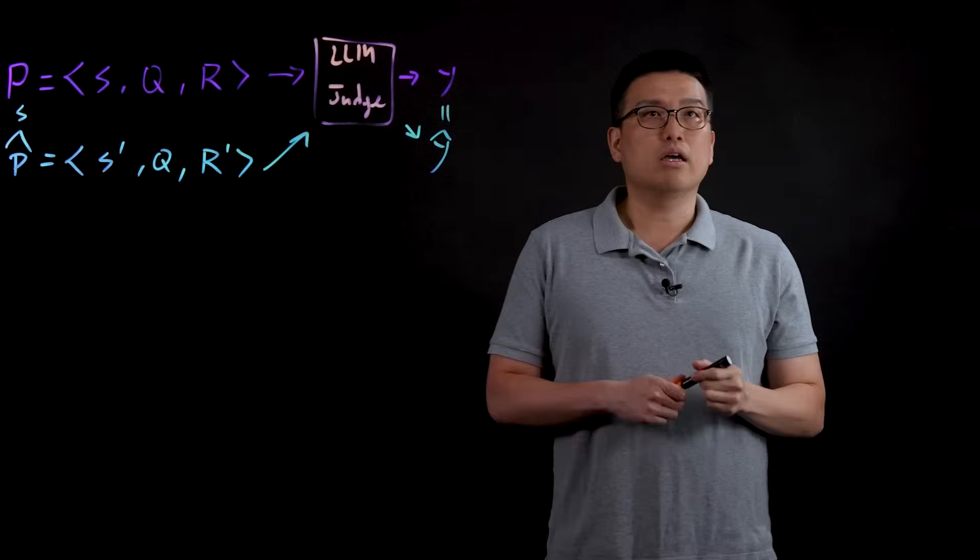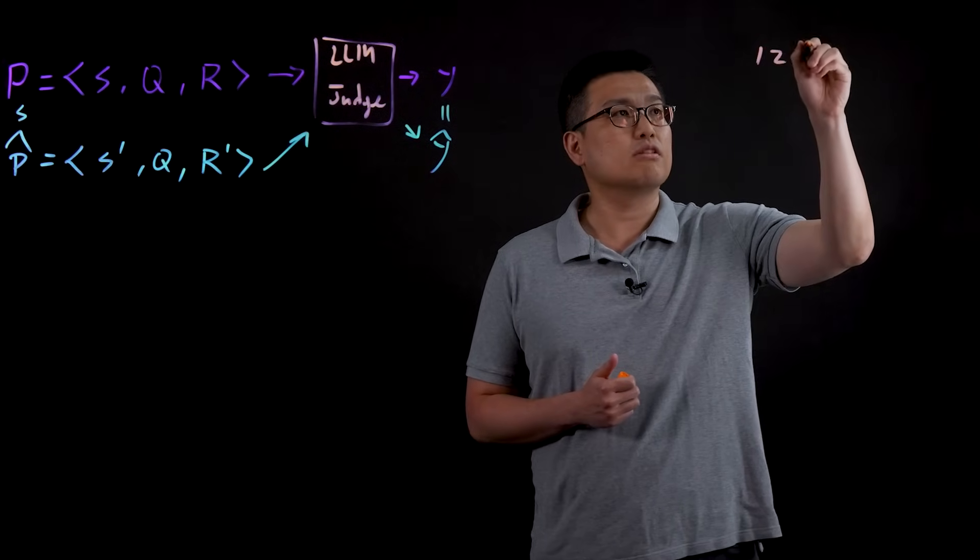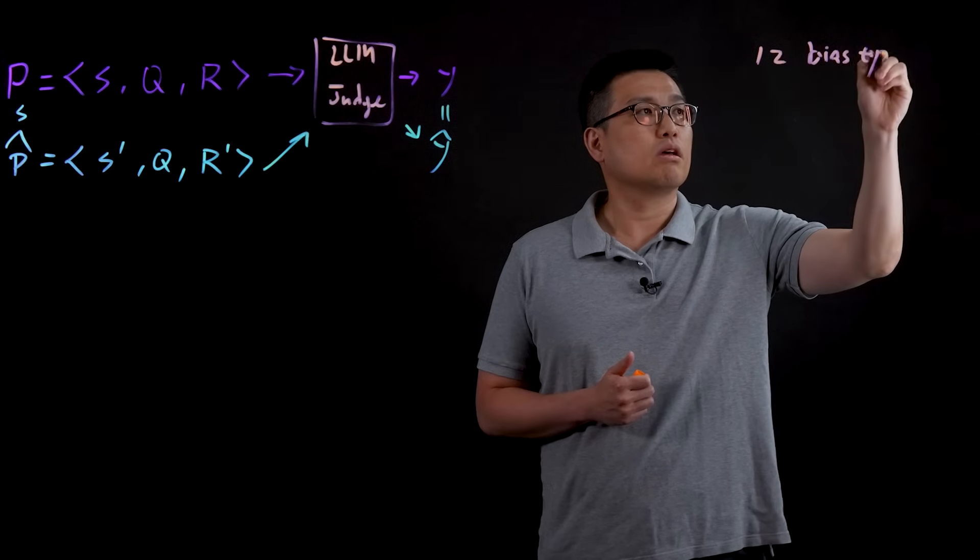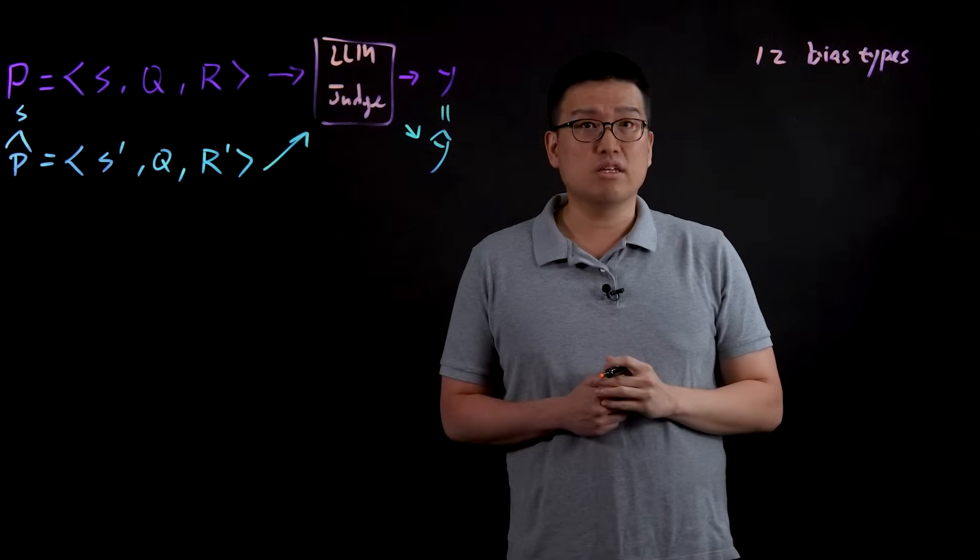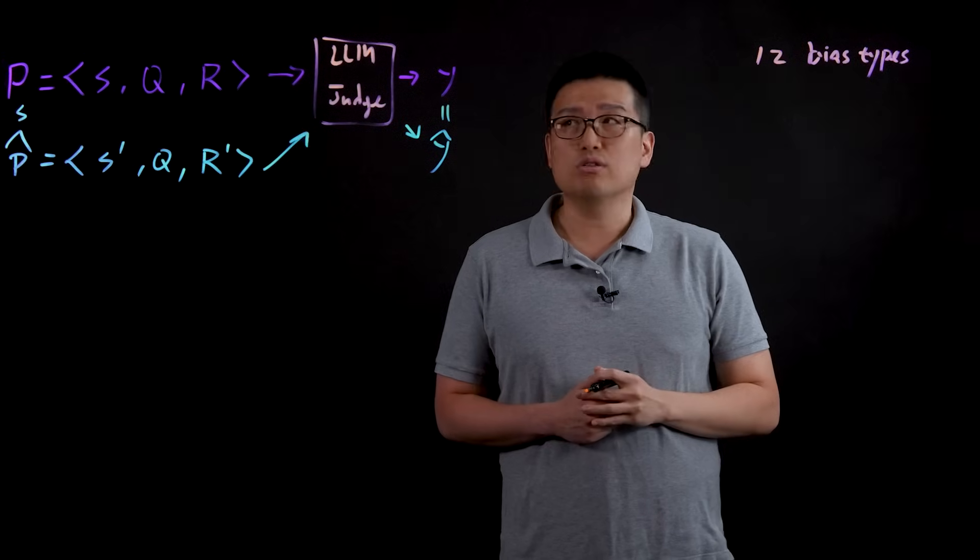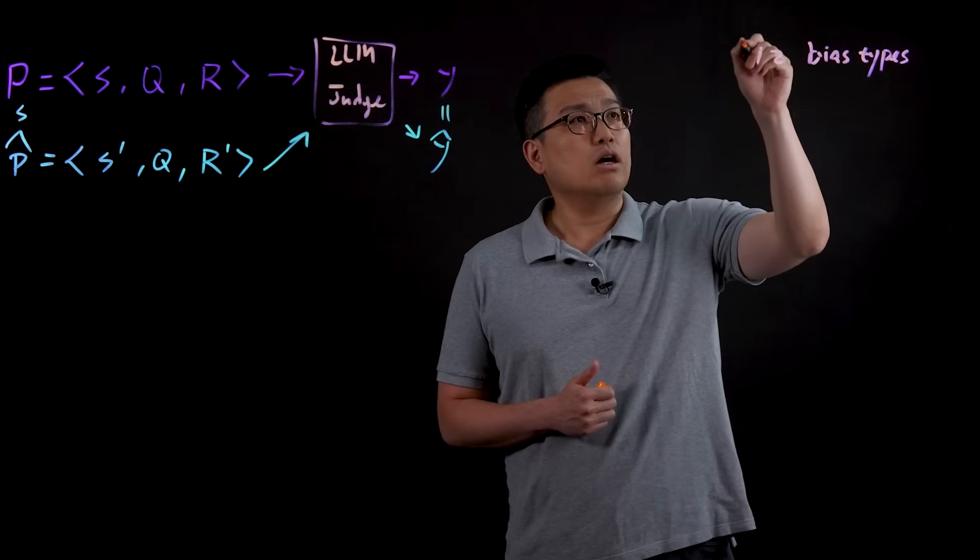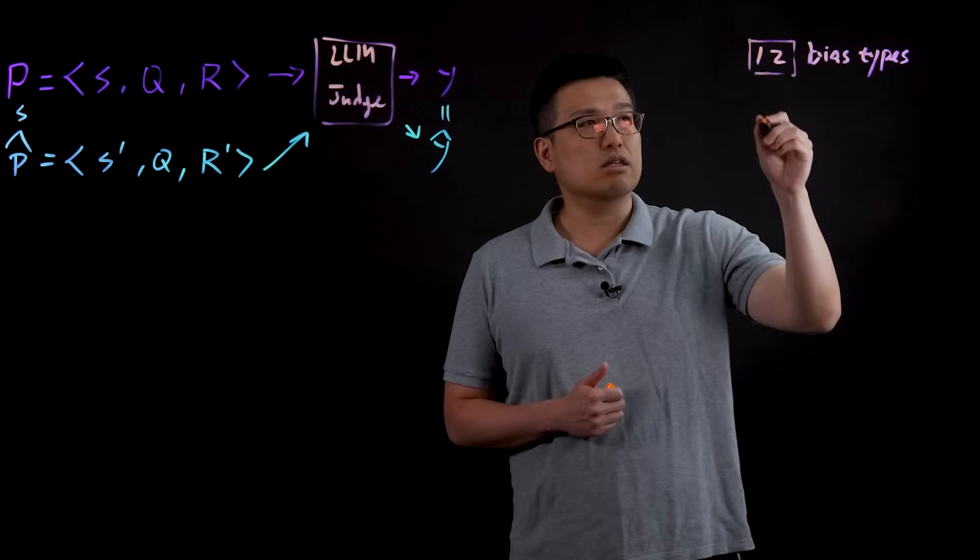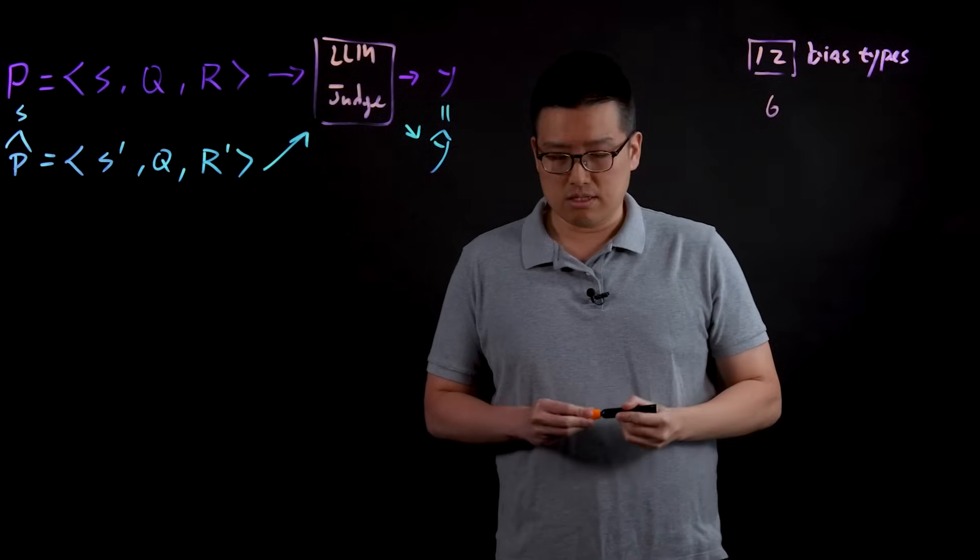However, in a large scale analysis that we did to focus on evaluating 12 different bias types, we figured out there are inconsistencies to different degrees for a wide range of LLM as a judge. And today I'm going to tell you, out of this 12 bias analysis, the six selected results that we found in our analysis.